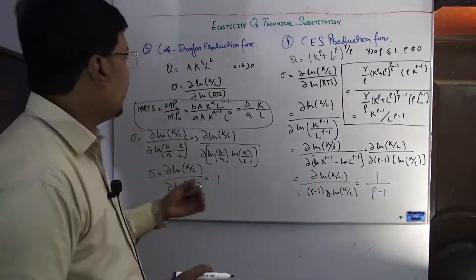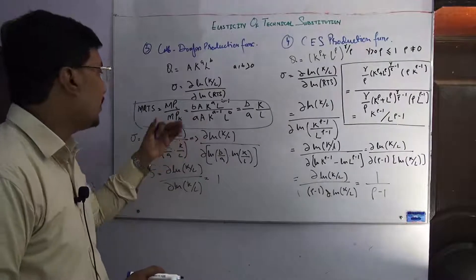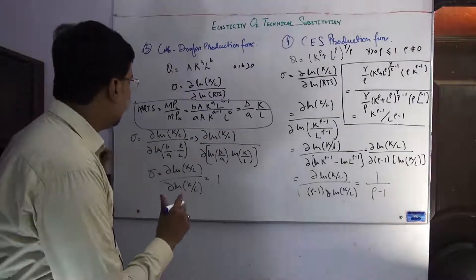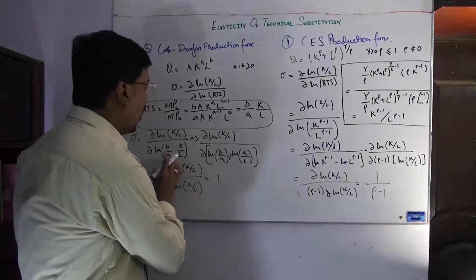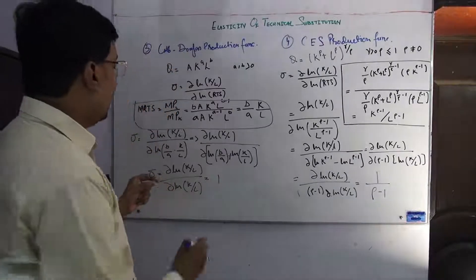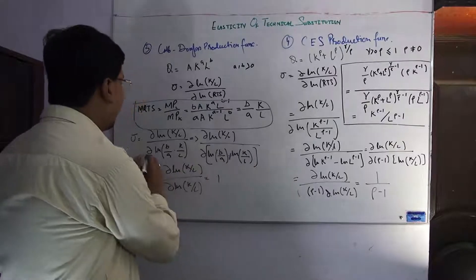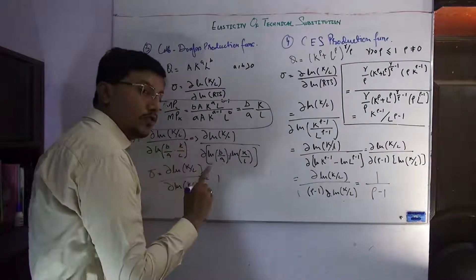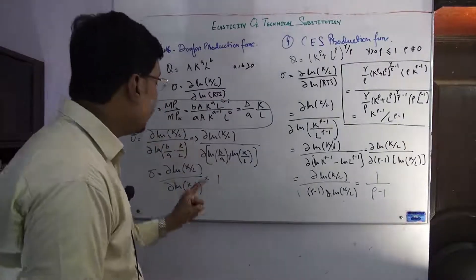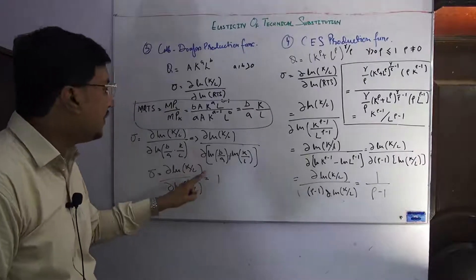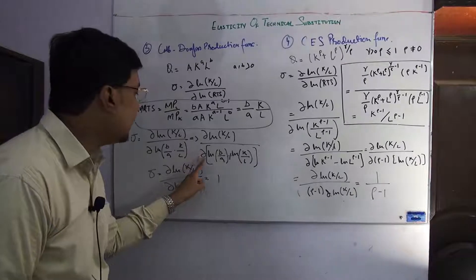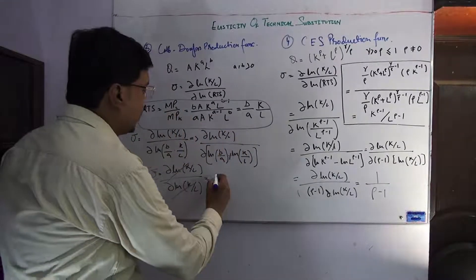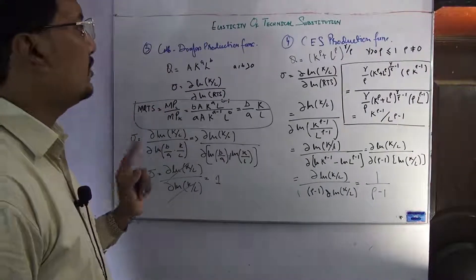Now we plug this RTS into the formula. We apply the log, so the multiplication converts into addition: log(β/α) plus log(K/L). The term log(β/α) is a constant, and the derivative of a constant is zero, so that term becomes zero. Applying the partial derivatives to the remaining terms, they cancel out, giving an elasticity of technical substitution for the Cobb-Douglas production function equal to one.